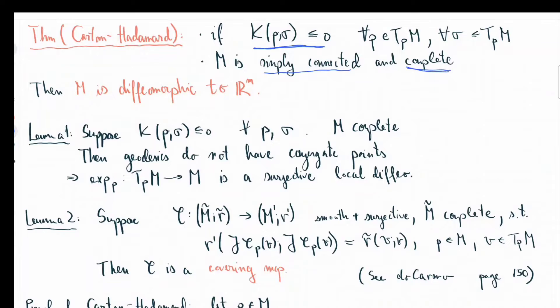The first lemma says that if you're non-positively curved and complete, then geodesics on your manifold cannot have conjugate points. So any Jacobian field along any geodesic cannot have vanishing points.